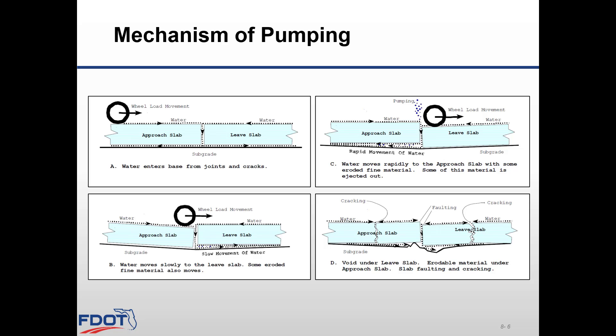The mechanism of pumping is captured in the following sequence. Water enters the base from joints and cracks in the pavement, as shown in Figure A. As the wheel load approaches the pavement joint on the approach slab, the water underneath the pavement moves slowly to the next slab. Some eroded fine material also moves in this direction. When the wheel load crosses the joint on the approach slab, the water underneath moves rapidly back to the adjacent slab. This high-speed water causes more erosion of the pavement base. Some water is ejected up through the joint with some of the base material. Evidence of base material can be seen as stains on the shoulder, as shown in Figure 6.